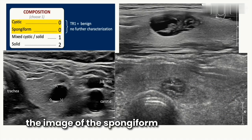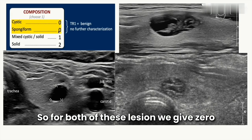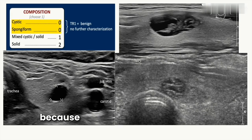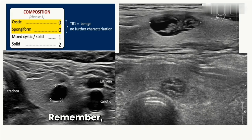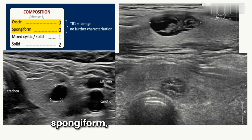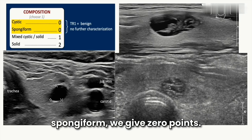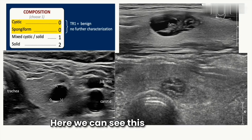For both completely cystic and spongiform lesions, we give zero points, because these are features of benign thyroid lesions. Remember: if the thyroid lesion is completely cystic or spongiform, we give zero points. This next image shows a mixed cystic lesion.